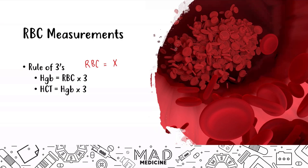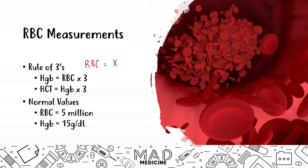When it comes to your normal values, you're going to have 5 million red blood cells, a hemoglobin of 15 grams per deciliter, and a hematocrit of about 45%. So 45% of your blood is going to be red blood cells, you're going to have 15 grams of hemoglobin per deciliter of blood, and 5 million red blood cells in that amount.